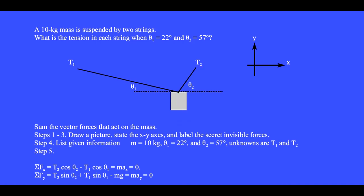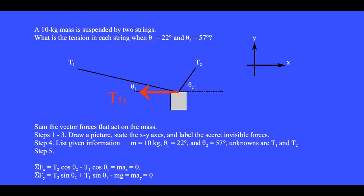Step 4: list the given information. We have m equals 10 kilograms, theta1 equals 22 degrees, and theta2 equals 57 degrees. The unknowns are the two tensions T1 and T2. Step 5: sum the x components of forces. We want to know the x and y components of T2. The magnitude of tension T2 is the hypotenuse of the triangle. The x part of T2 is adjacent to angle theta2, so T2x equals T2 cosine theta2, and it gets a plus sign because it points in the positive x direction. The x component of T1 gets a minus sign because it points in the minus x direction, with cosine because this side is adjacent to angle theta1.